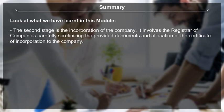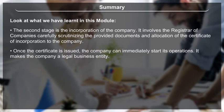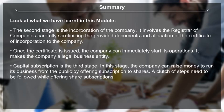The second stage is incorporation of the company. It involves the Registrar of Companies carefully scrutinizing the provided documents and allocation of the Certificate of Incorporation. Once the certificate is issued, the company can immediately start its operations, making it a legal business entity. Capital subscription is the third stage, in which the company can raise money from the public by offering subscription to shares, with a series of steps to be followed while doing so.